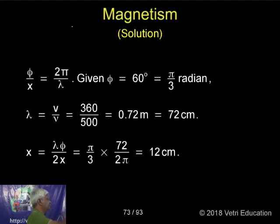For a wave, phi is equal to 2 pi by lambda times x. Therefore, phi by x is equal to 2 pi by lambda. Here, phi is equal to 60 degrees, that is pi by 3 radians.